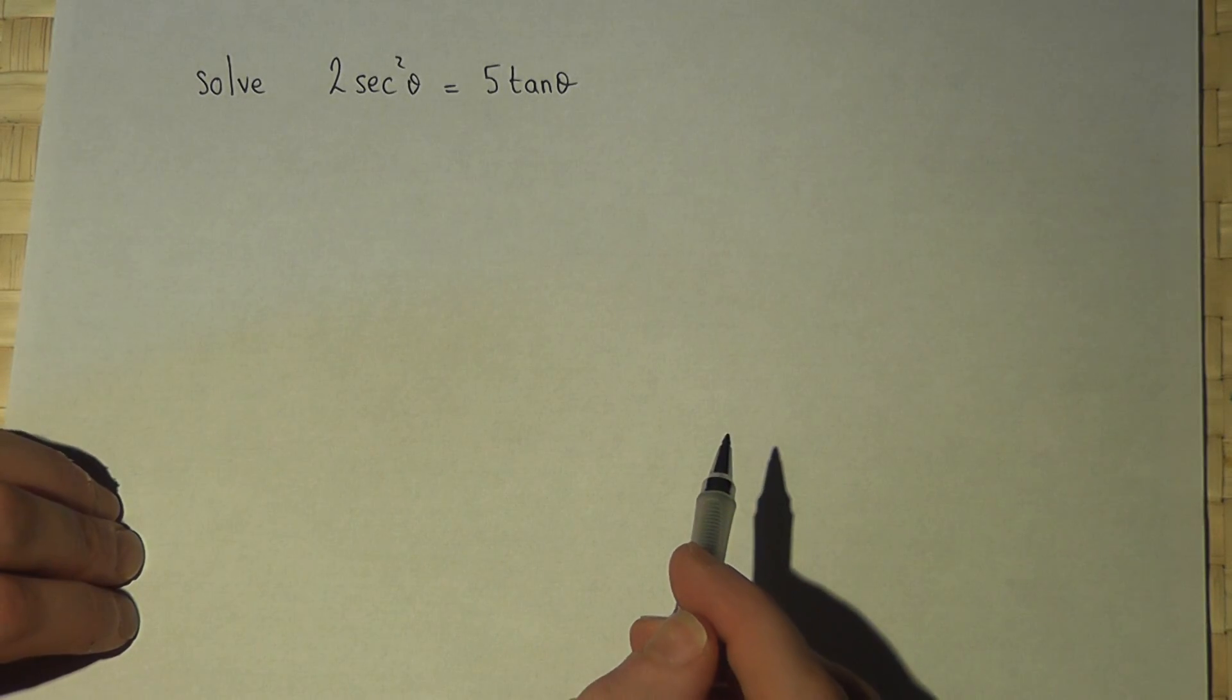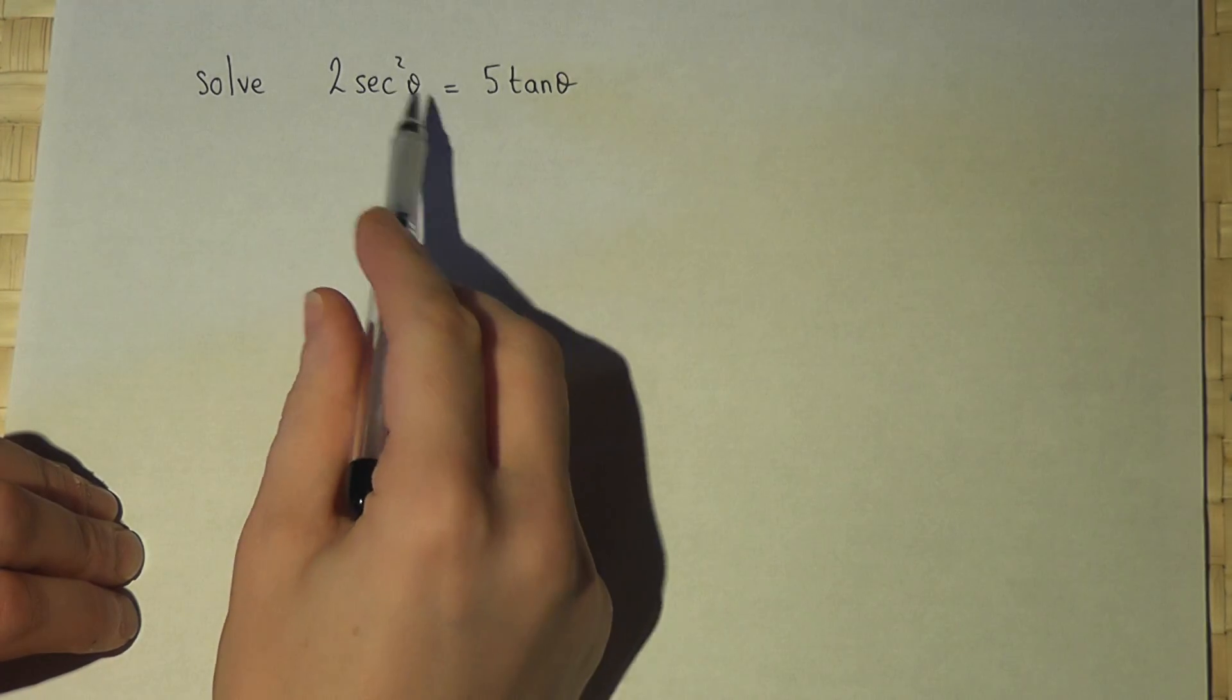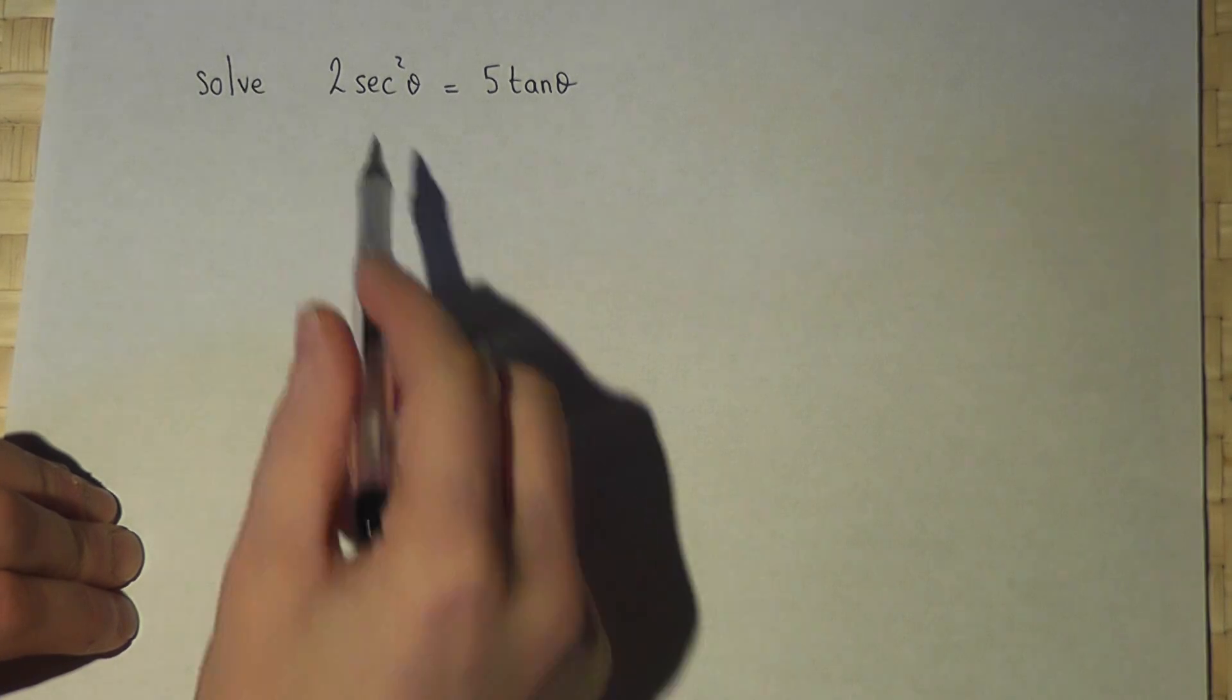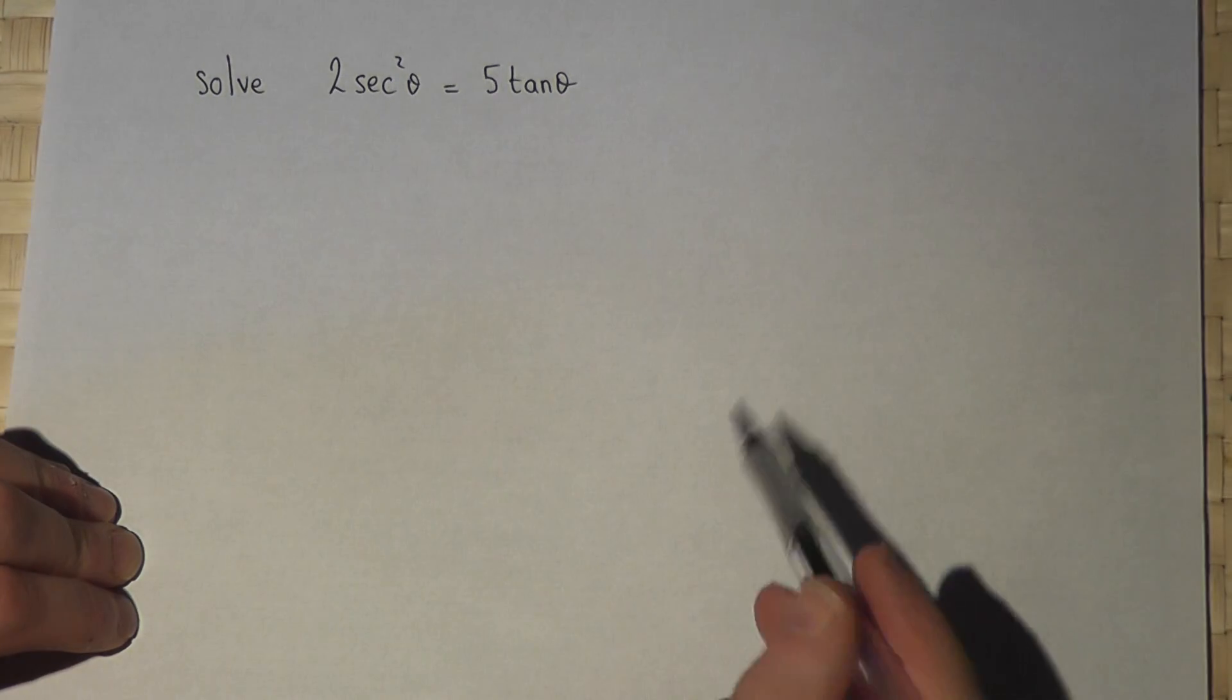This question asks us to solve an equation involving sec squared theta, which is 1 over cos squared, and a tan theta.